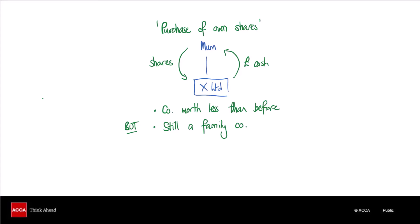Mum might decide to keep some shares just so that she has a little bit of an influence. The issue that we're going to be concerned with is how do we treat this from a tax point of view, and there are actually two possible tax treatments here. Think about the scenario — mum has just sold her shares, let's say for a million pounds, and the most obvious tax treatment for mum is that that is going to be a sale of shares, which will lead to capital gains tax.